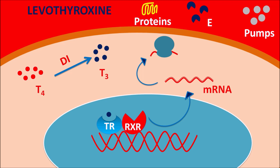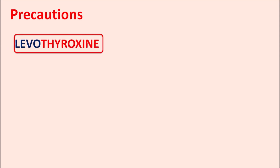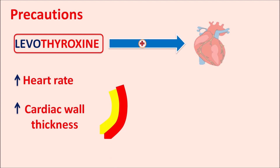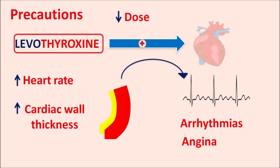In this way, levothyroxine increases the basal metabolic rate and restores thyroid hormone levels. One important precaution is that this drug stimulates the heart, increasing heart rate and potentially causing palpitations. Over longer periods it can increase the thickness of the cardiac wall, raising the risk of cardiac arrhythmias, angina, or myocardial infarction. Care should be taken in patients with existing cardiac problems, and if arrhythmia or angina symptoms appear, the dose should be reduced immediately.